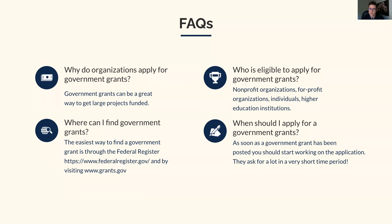We've gotten city and county level but not federal, and some people have federal grants but not city, county, or state — so lots of different levels for government grants. Where can you find government grants? The easiest way is through the federal register. The two URLs are federalregister.gov and grants.gov. Who is eligible to apply? Non-profit organizations, for-profit organizations, individuals, and higher education institutions — a pretty broad range.